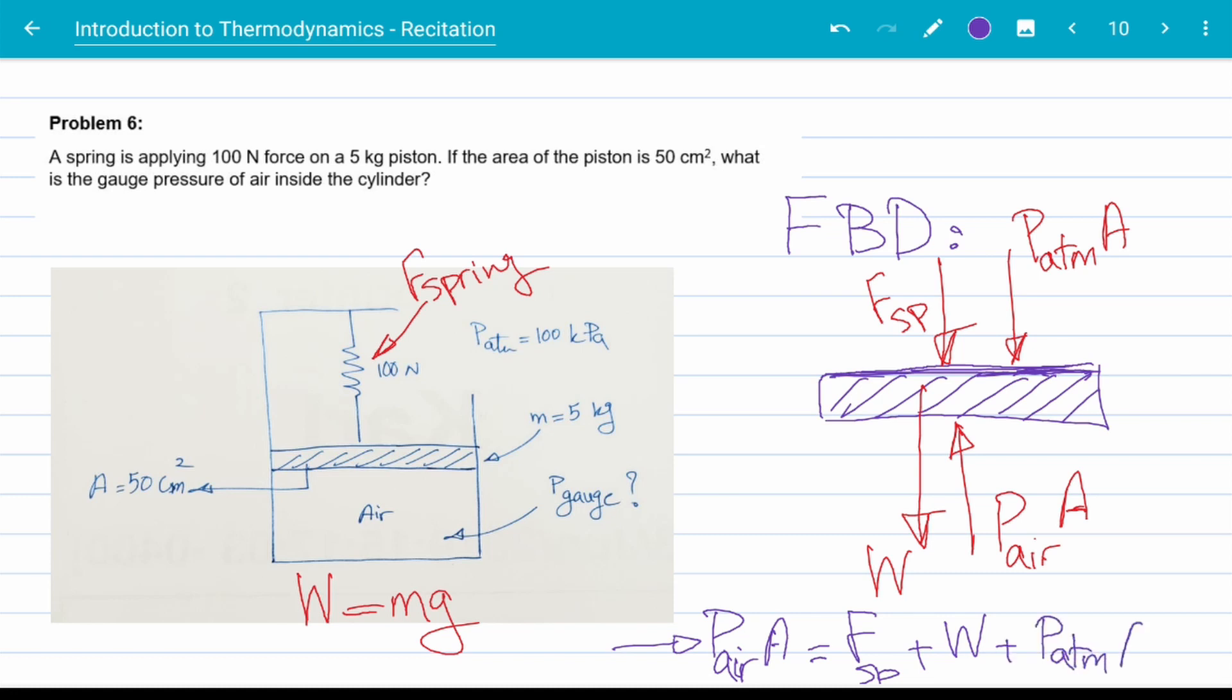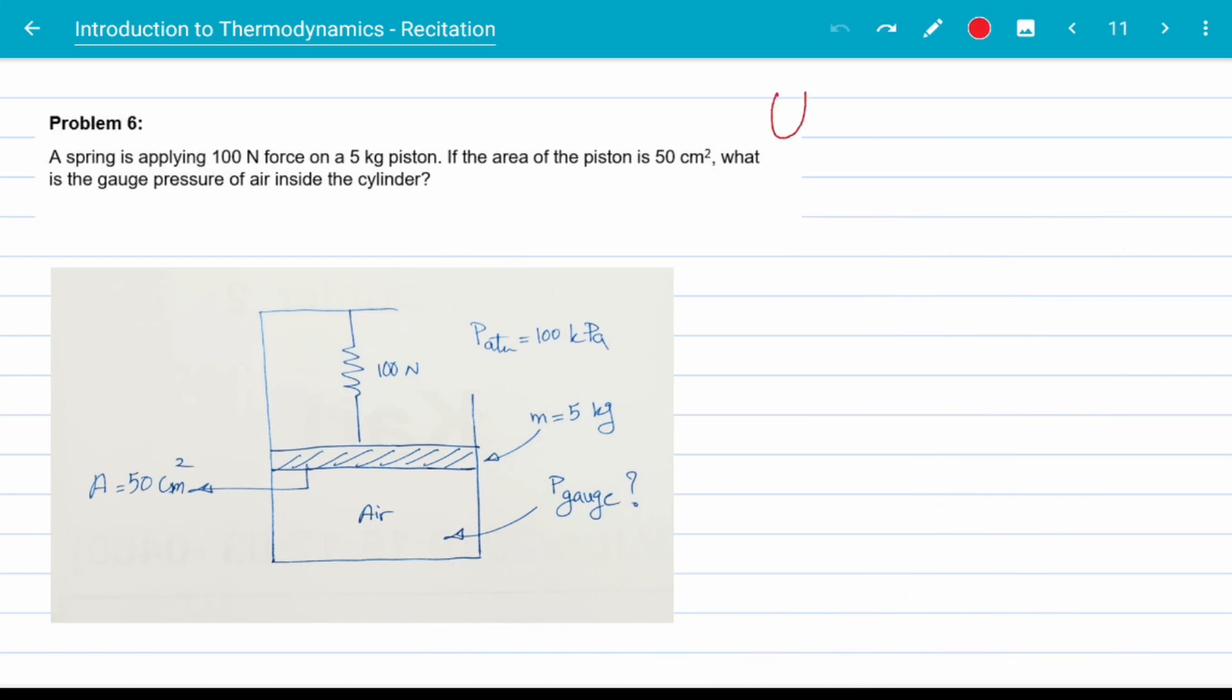Before we continue, make sure that we have unit consistency. In SI, the consistent unit used for area is meters squared. So it's always practical to convert anything else to meters squared. How do we do that? We know that if we multiply a number by 1 over 1, nothing changes, right? So let's do that.